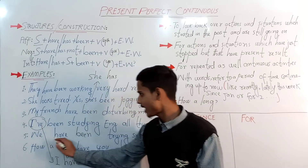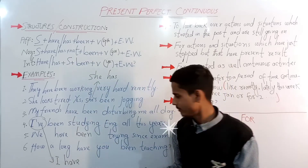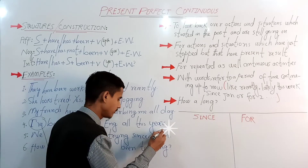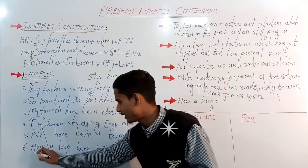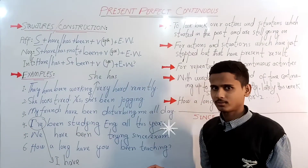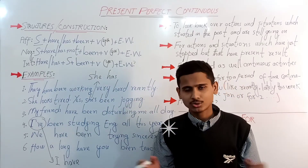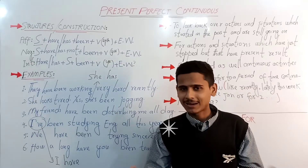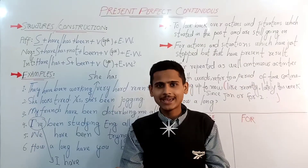The fifth example is: 'We have been trying since our exam' — meaning we've been trying since our school or university exam. The sixth and final example is: 'How long have you been teaching?' — or 'How long have you been teaching English, international relations, psychology, or biology?'